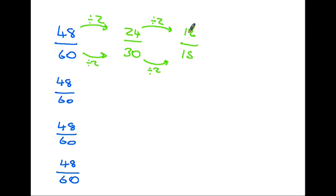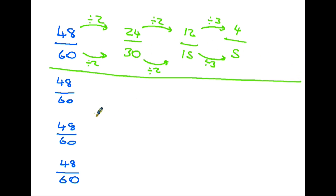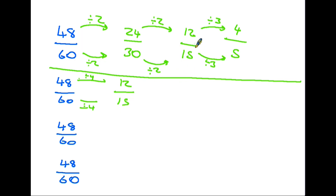Now I can't divide 12 and 15 by two. Let's try three — yes, it works. Twelve divided by three is four and fifteen divided by three is five. We've come all the way down to four fifths. Alternatively, you might have seen that 48 and 60 are both in the four times table. Dividing by four gives 12 over 15, which again goes down to four fifths.